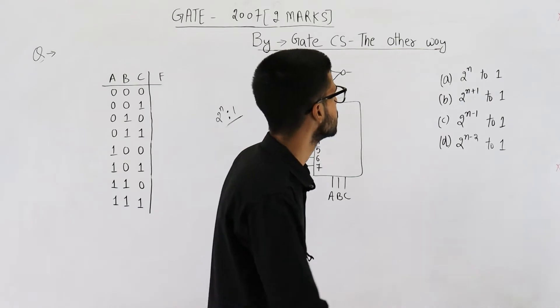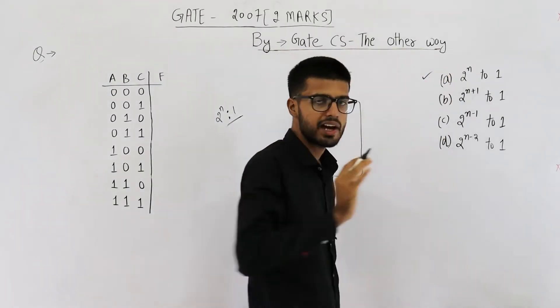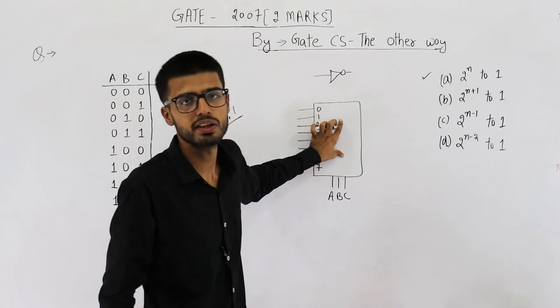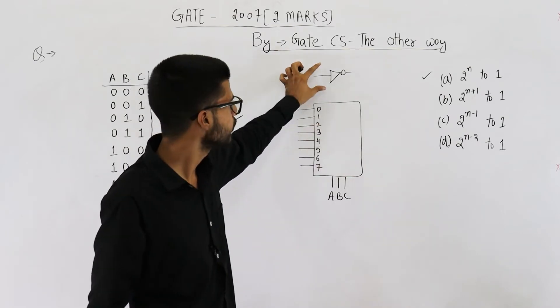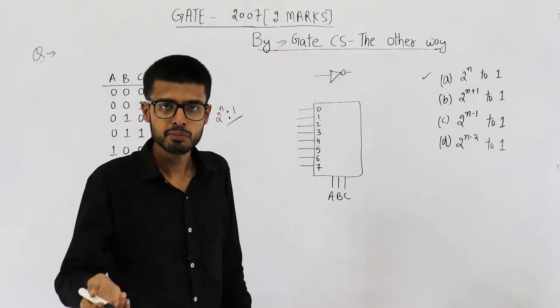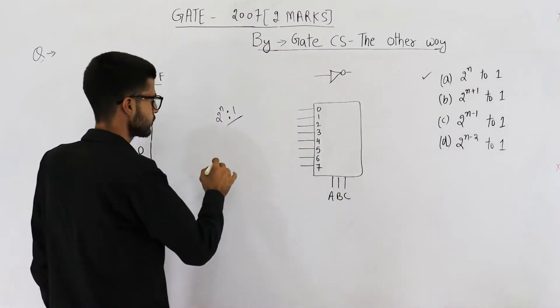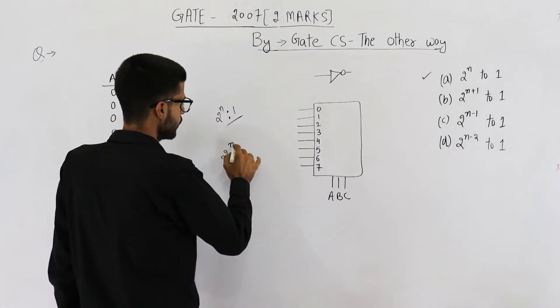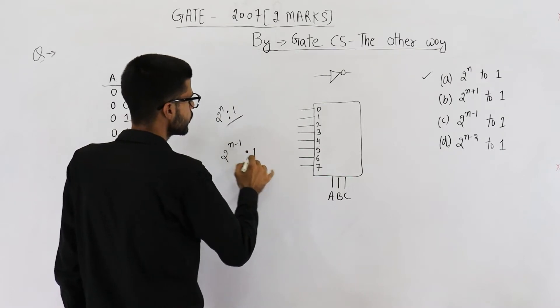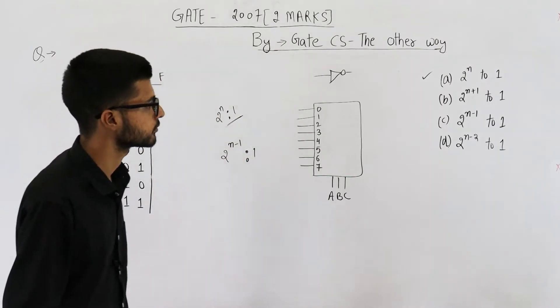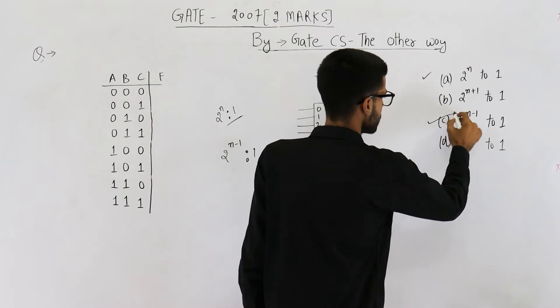That means answer could have been option A, if you have to use only a multiplexer, but we also have an inverter. That means size of this multiplexer can be further reduced by one. So you can just go with two power n minus one ratio one multiplexer. So your answer is option C.